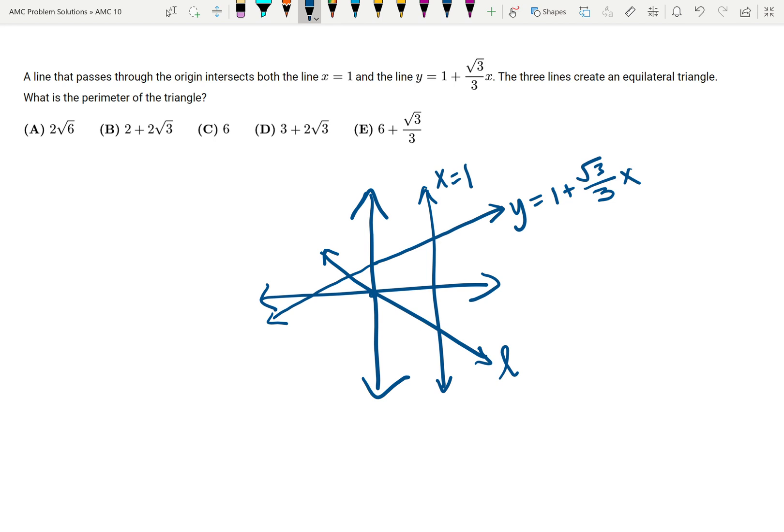You can see this triangle here is the equilateral triangle. So in order to find the perimeter, we just need to find the length of one side. I'm going to focus on this side that's along the line x equals 1.